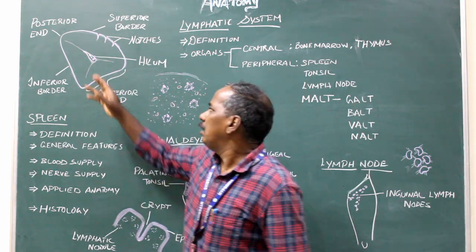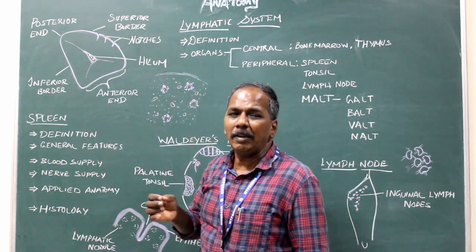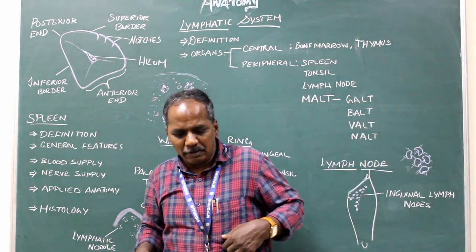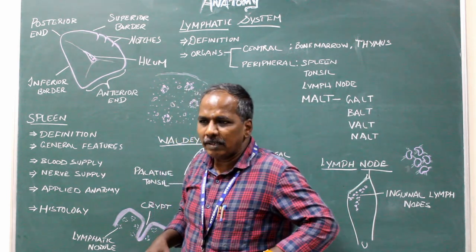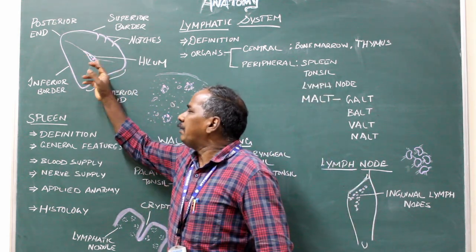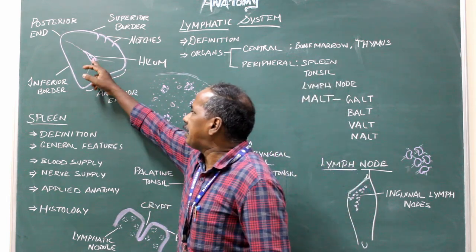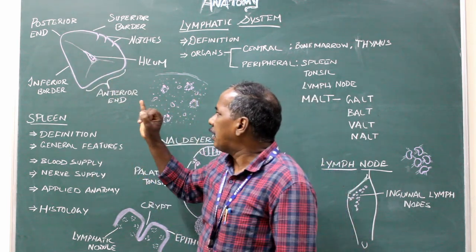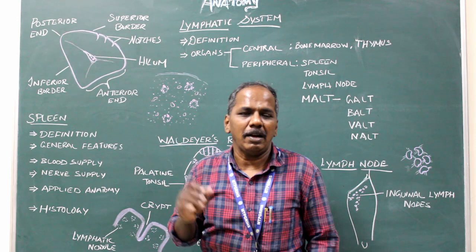The gastric impression is related to the stomach, the renal impression is related to the left kidney, and the colic impression is related to the left colic flexure — the junction of the transverse colon and descending colon. The hilum of the spleen is present on the medial surface and is related to the tail of the pancreas. The structures entering and exiting the hilum are the splenic artery, splenic vein, and sympathetic plexus surrounding the splenic artery.